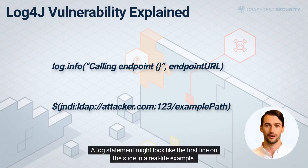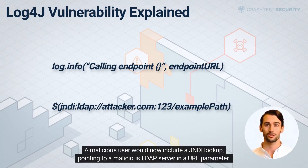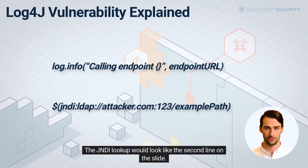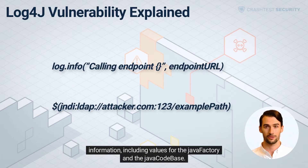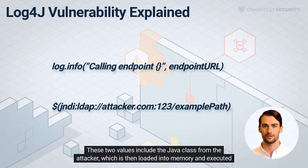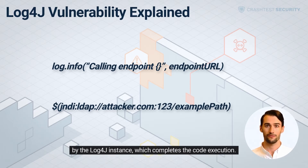A log statement might look like the first line on the slide in a real life example. A malicious user would now include a JNDI lookup pointing to a malicious LDAP server in a URL parameter. The JNDI lookup would look like the second line on the slide. The Log4j library then communicates with this LDAP server at attacker.com and receives the directory information, including values for the Java factory and the Java codebase. These two values include the Java class from the attacker, which is then loaded into memory and executed by the Log4j instance, completing the code execution.